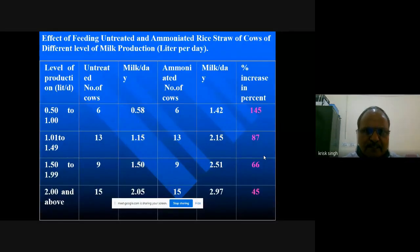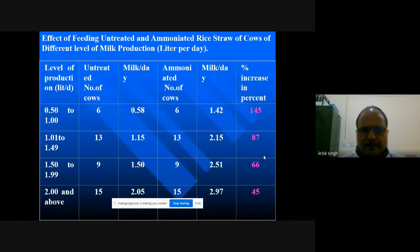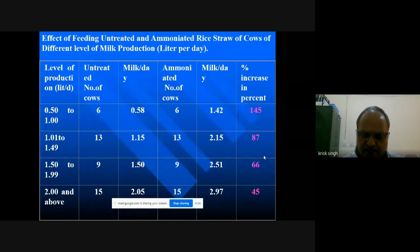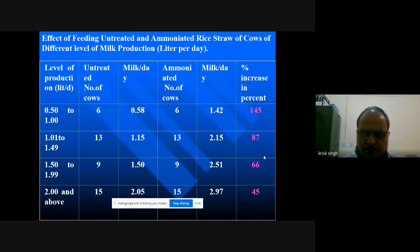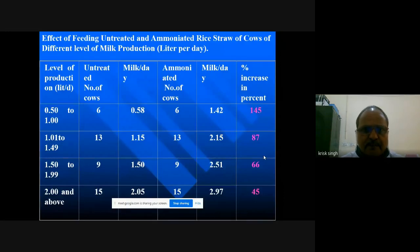There are some examples where different supplements on growth performance have been tested. With untreated straw versus urea-treated straw, you find almost double the daily growth rate — 110 grams against 228 grams. When supplemented with cottonseed cake or green berseem, you will find better performance with ammonia or urea-treated straw against non-treated straw. Similarly, in milk production, there is a better effect of urea-treated straw, with percent change in milk improved from 45 to 66, 87, and 145 depending upon the material.